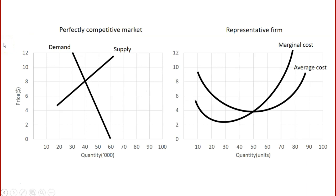Here we have a representation of a perfectly competitive market. We've got our demand curve and supply curve, and a graph of the cost curves of a representative firm from that market. We're assuming that all the firms participating in this market are identical, so what is true for one firm is true for all others. We only need to look at one firm to know what's happening to all of them — that is our representative firm.